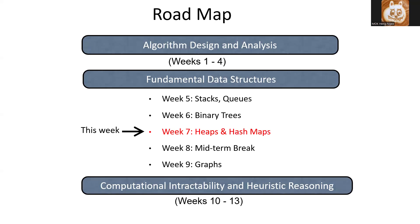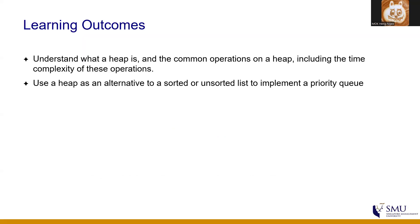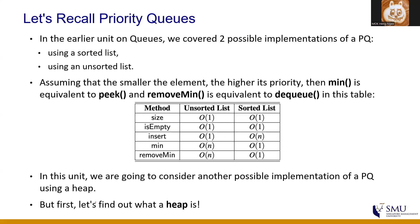Hi, welcome to Unit 7. We are going to discuss heaps now. We actually talked about priority queues in an earlier lecture when we talked about stacks and queues. We covered two possible implementations of a priority queue — internally, a priority queue can use a sorted list or an unsorted list.